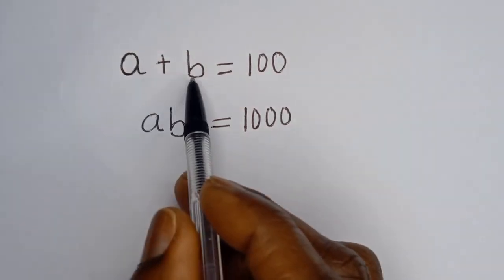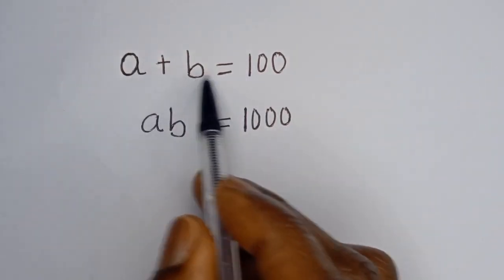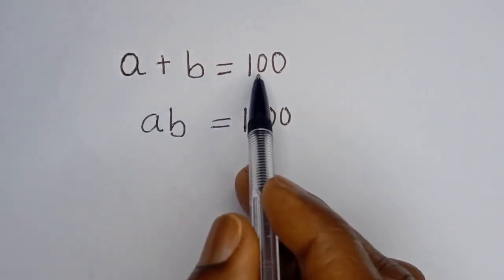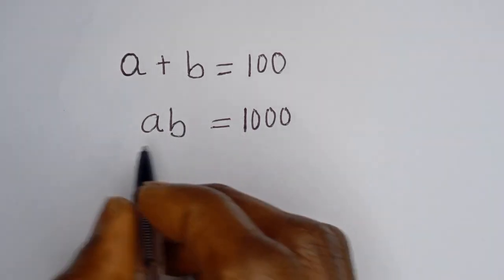Hello. How to solve for A and B in this equation? A plus B is equal to 100, and AB is equal to 1,000.